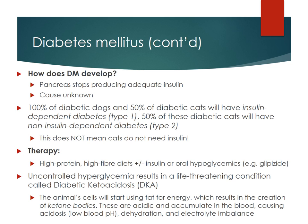The pancreas stops producing the right amount of insulin — why this happens is idiopathic. 100% of diabetic dogs and 50% of diabetic cats will have insulin-dependent diabetes, typically called type 1 diabetes — they 100% need insulin to control their blood sugar. The other 50% of diabetic cats have non-insulin dependent diabetes, type 2, which can be controlled with diet alone. Therapy includes a high-protein, high-fiber diet plus or minus insulin, or an oral hypoglycemic — though injectable insulin is more commonly used.